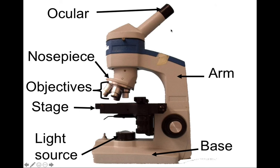The ocular lens is the lens you look through with your eye — it doesn't ever change and always has the same magnification. You'll look through this lens, and there are other lenses down below that cause the magnification of your picture. We'll also find the arm, which is the structural part you use to hold and carry the microscope, and the base that the microscope sits upon. Some of the more notable features are the nosepiece, objective lenses, and the stage.